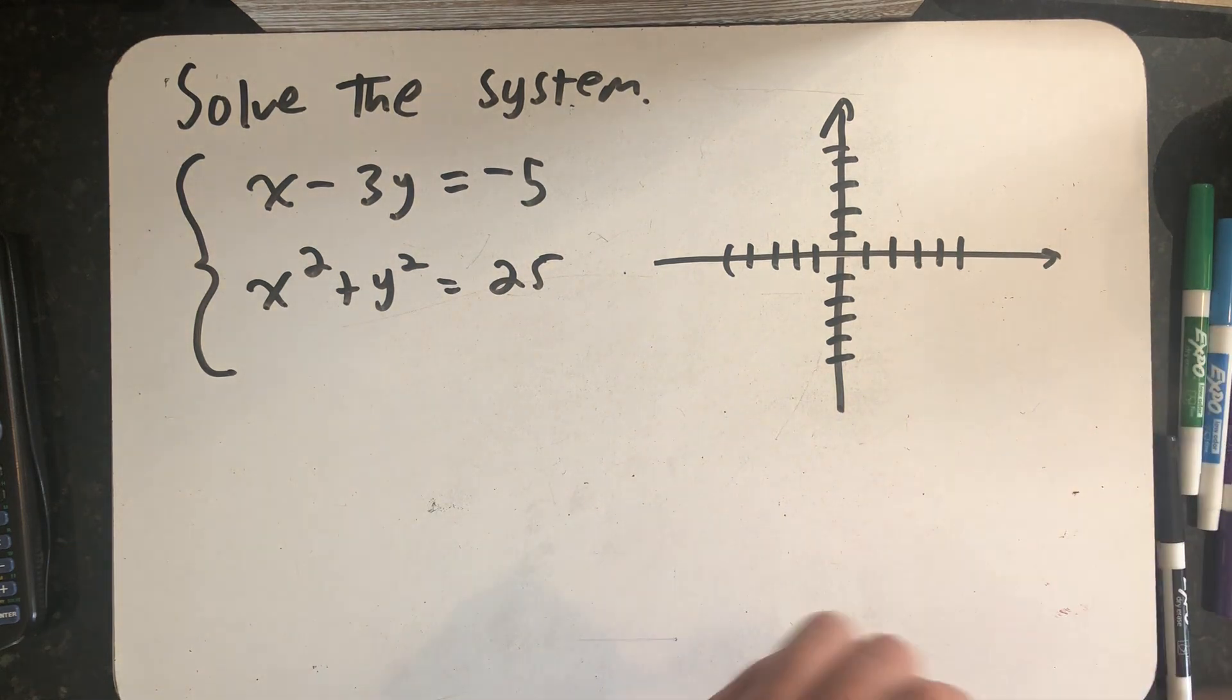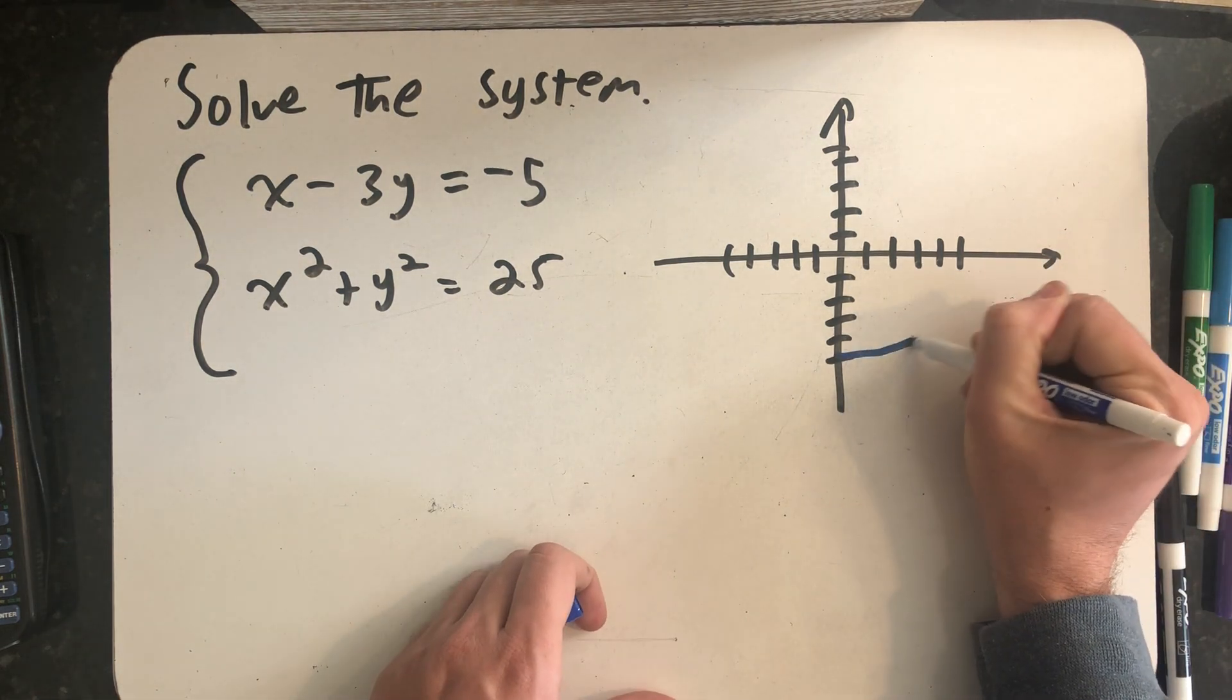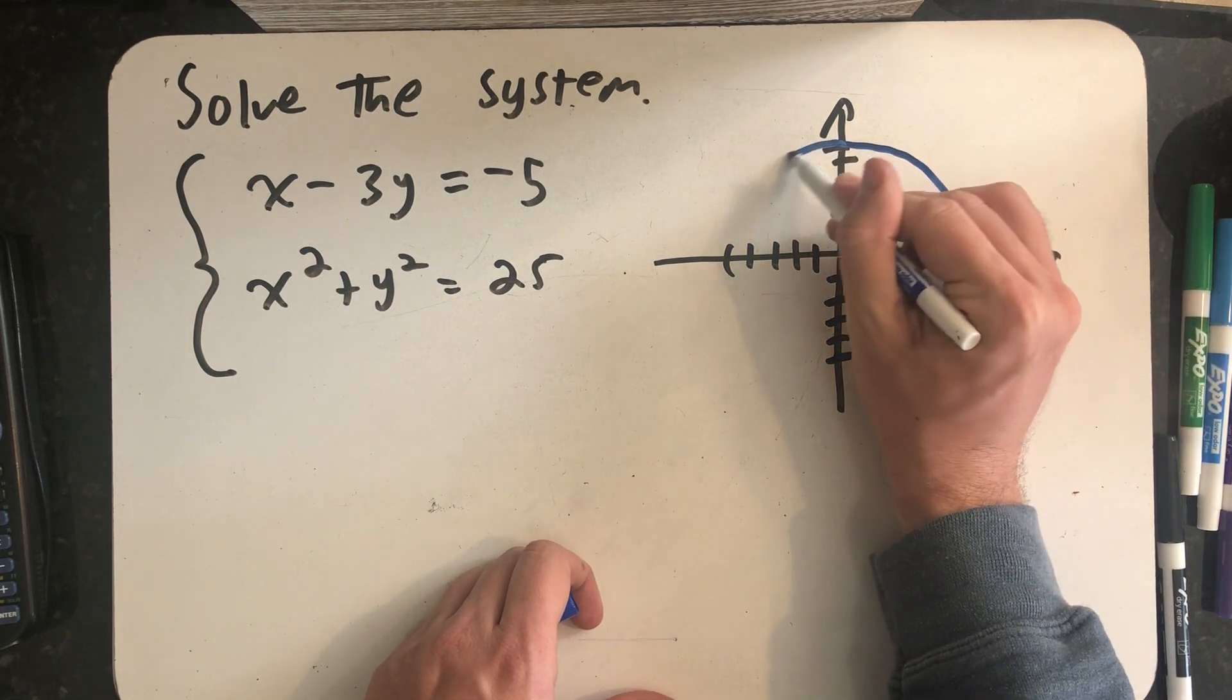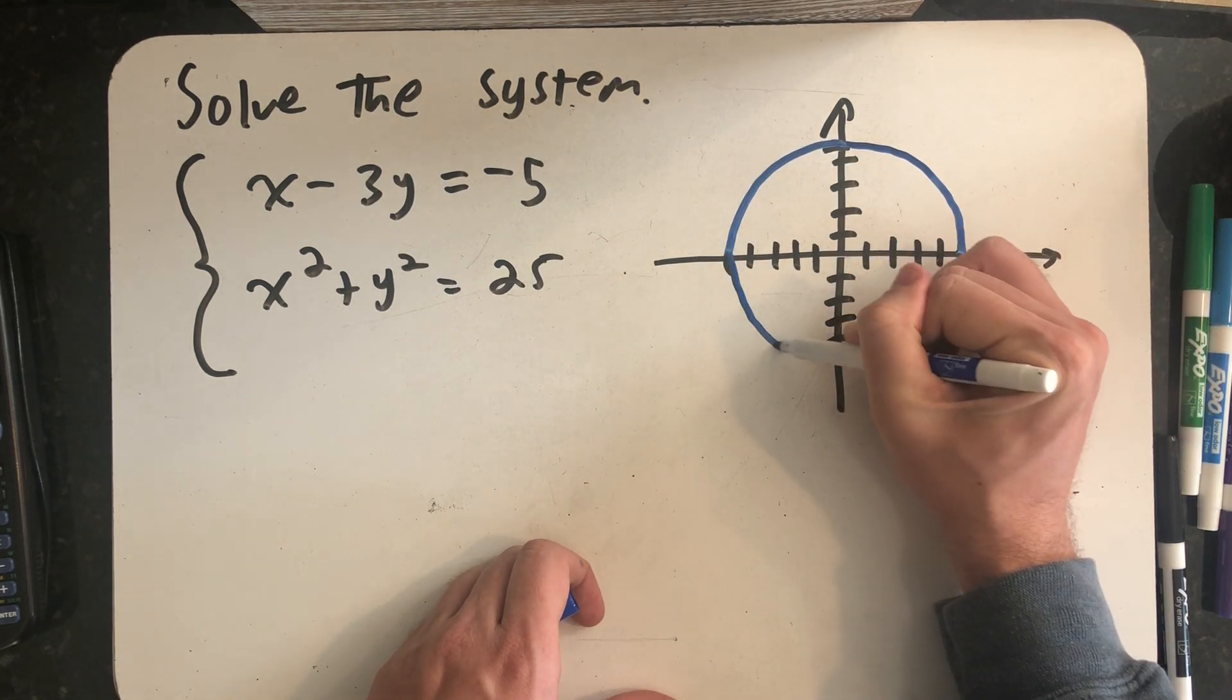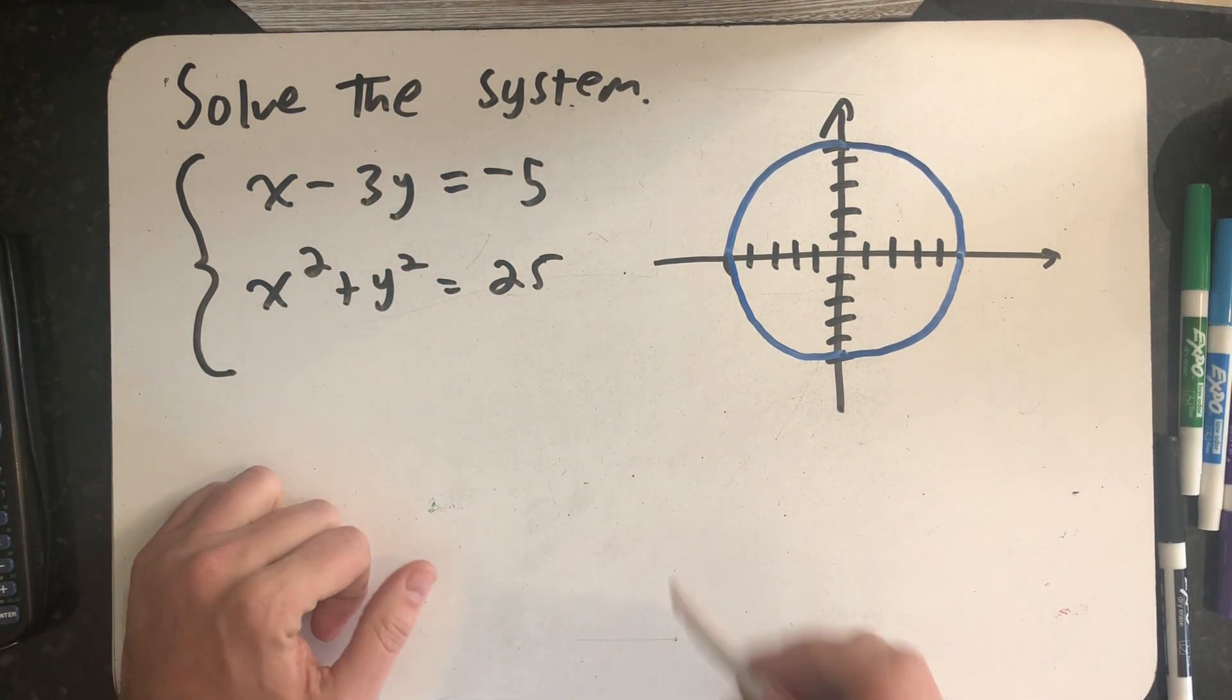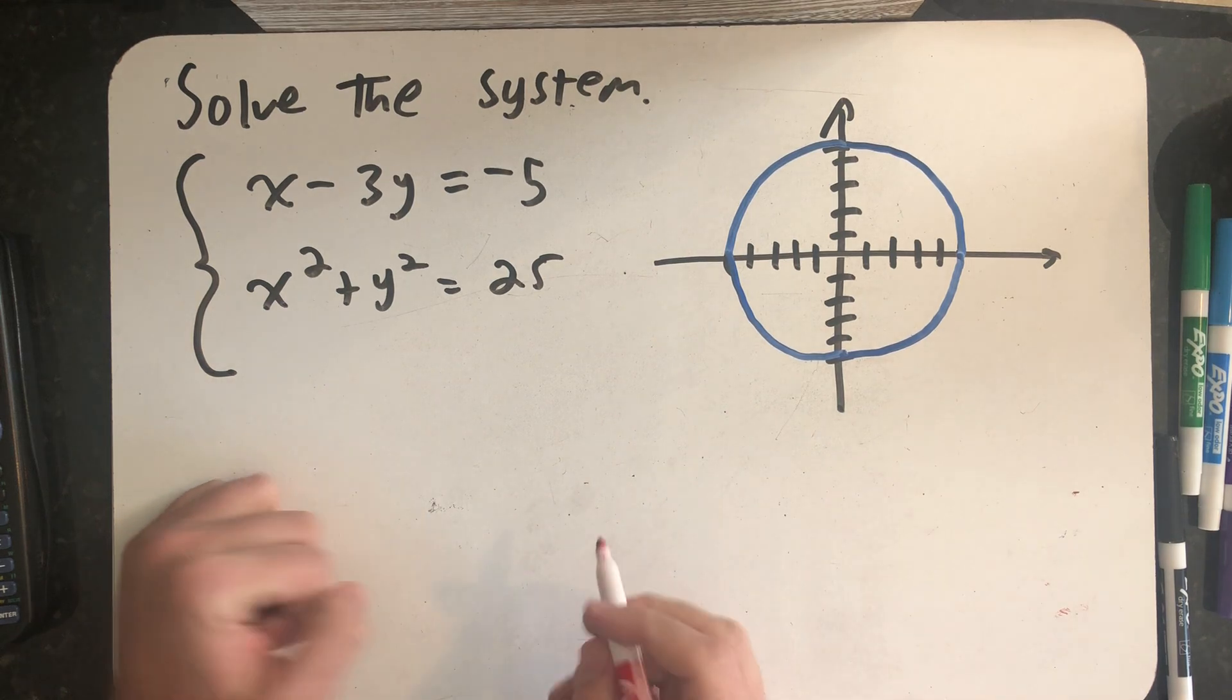So here's my circle of radius 5. And now I need to worry about graphing the top equation. So let's get y by itself so that's in that nice slope intercept form.